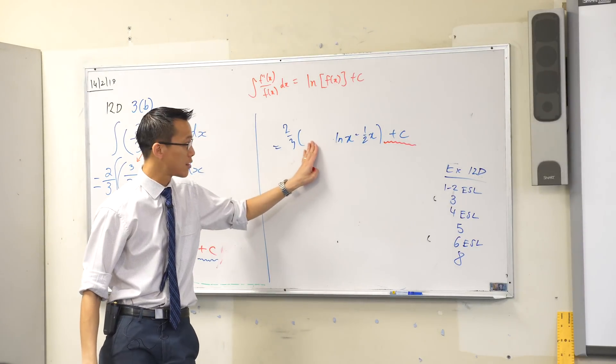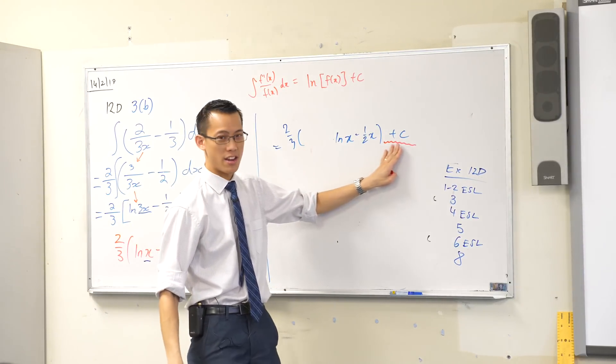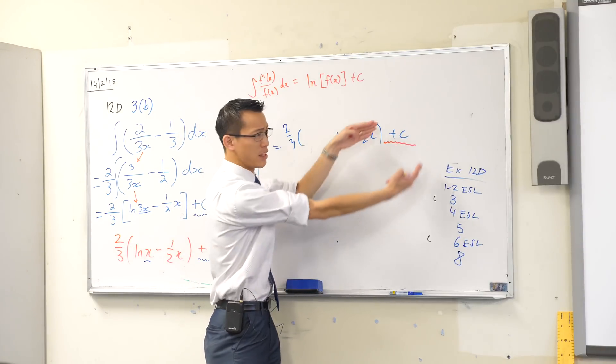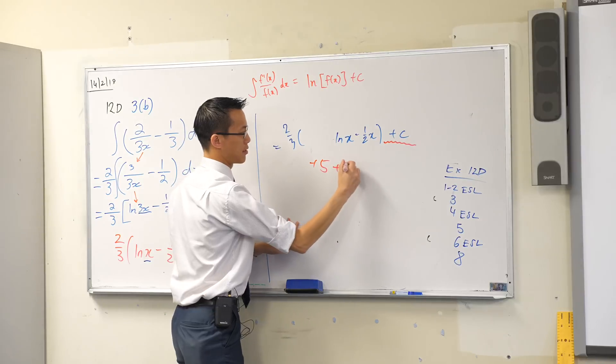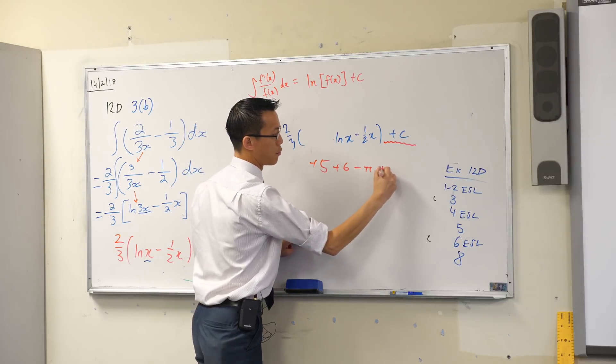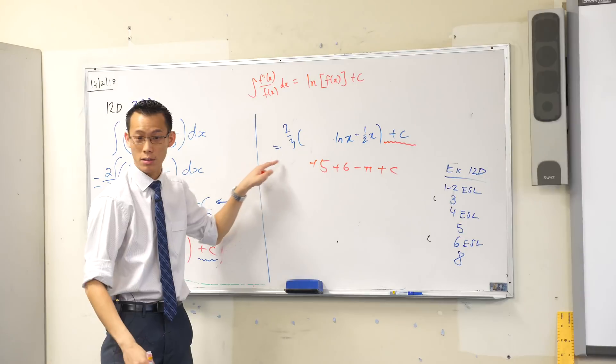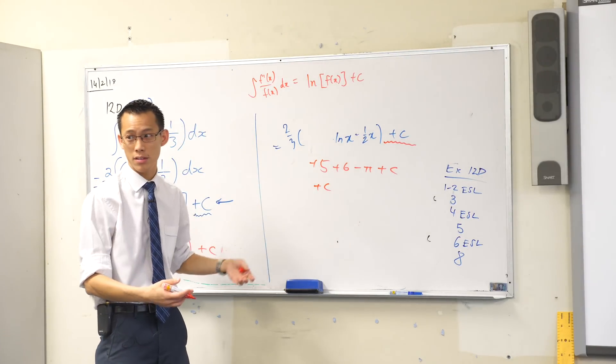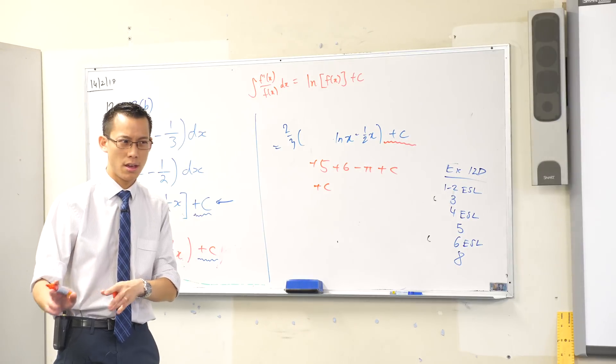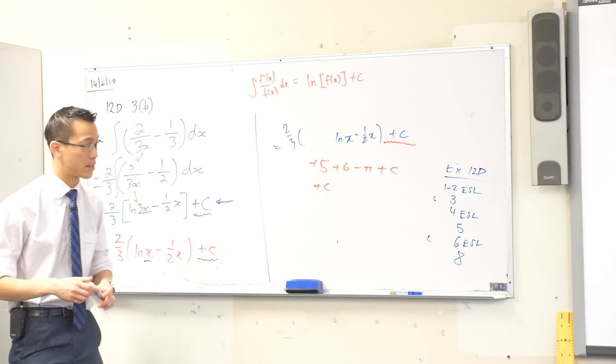And that's the same reason why the textbook has written it like this rather than like this. It's not wrong. It's just irrelevant. If it's part of the constant, then I might as well combine it, like boil it in with this constant. If I had, for instance, plus 5, plus 6, minus pi, plus c. See that whole long string of things? I could just replace them with plus c. Because it's just a different constant. Does that make sense? And this will not be the only time that you encounter this.